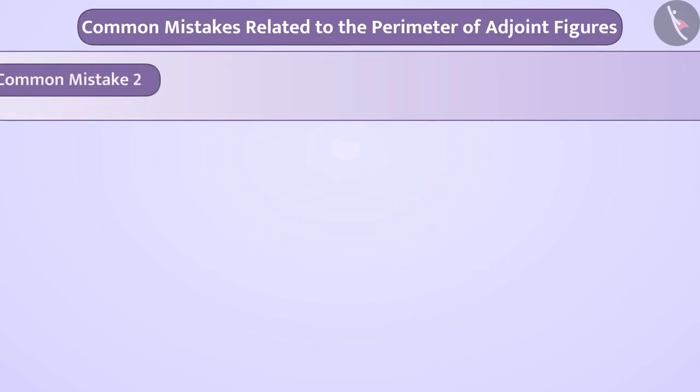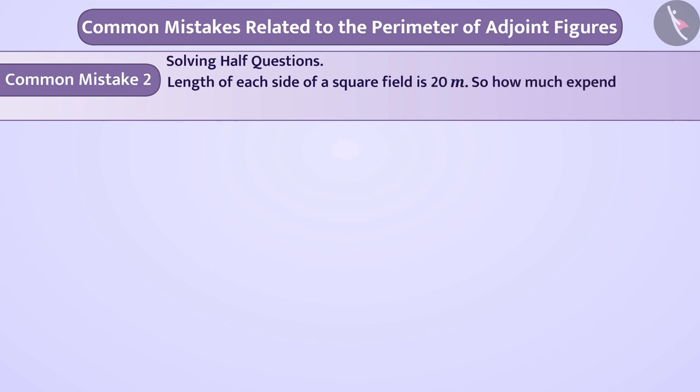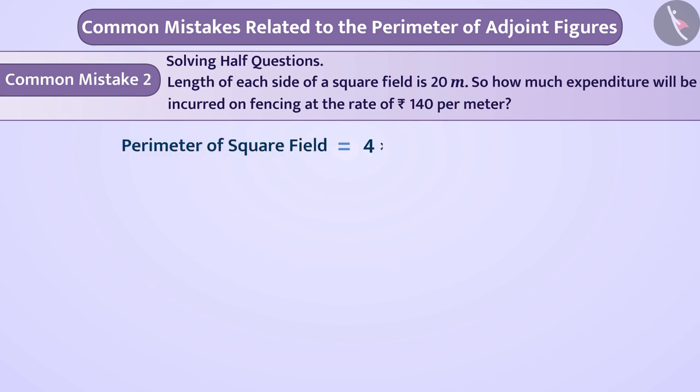Common mistake 2. Solving half questions. If some students are asked that the length of each side of a square field is 20 meter, so how much expenditure will be incurred on fencing at the rate of 140 rupees per meter? So, the children determine the perimeter of the square field 4 multiplied by 20 is equal to 80 meters. They forget to simplify the question further.